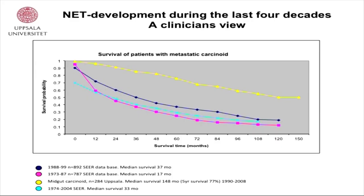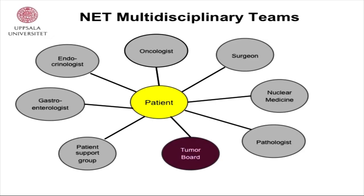Here is a survival curve of patients with metastatic carcinoids. The three lower lines are from the United States, and the yellow line is from an expert center — Uppsala. You should be treated in an expert center in order to have the best survival and quality of life. This specialized center includes a multidisciplinary team with oncologist, surgeon, nuclear medicine, pathologist, gastroenterologist, endocrine oncologist, patient support group, and a tumor board. And always the patient in the center — always.